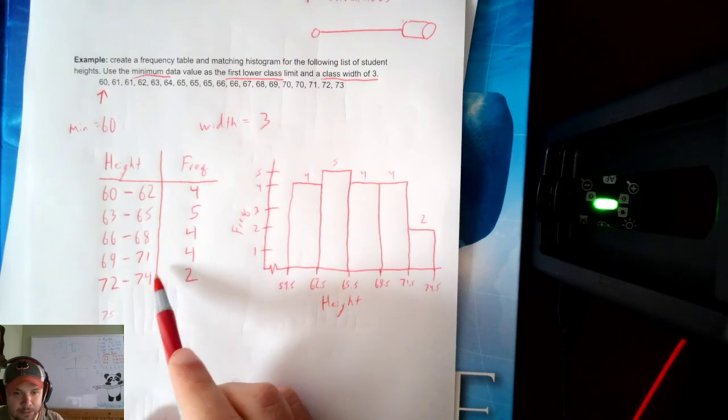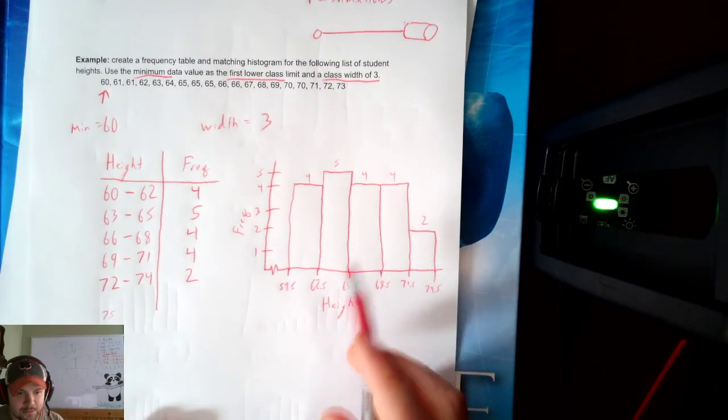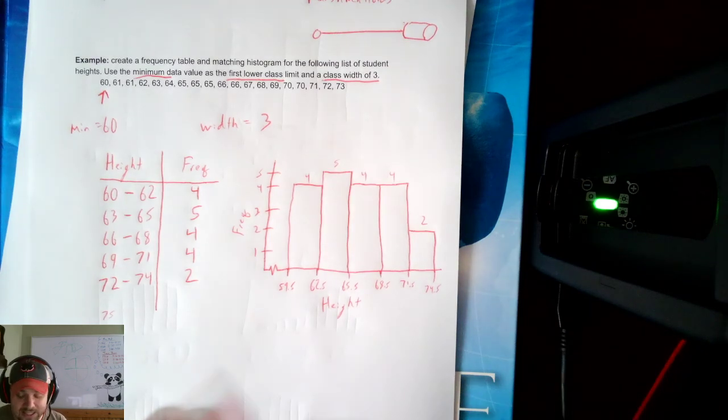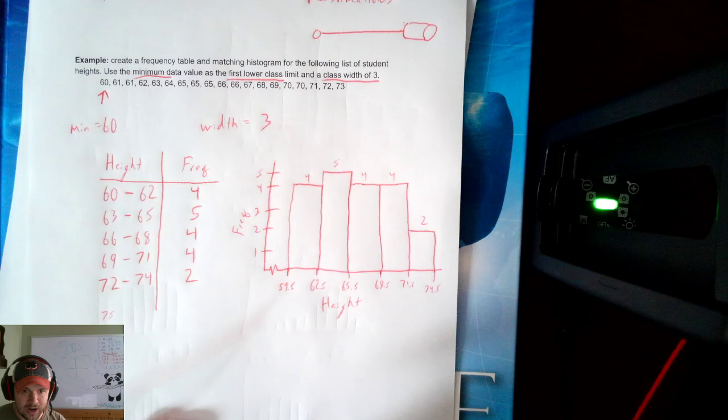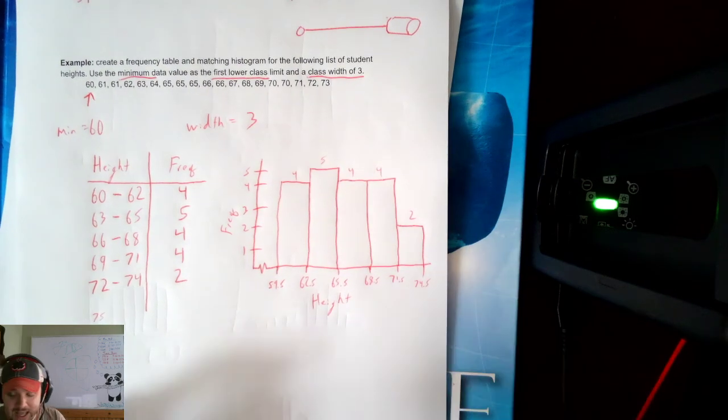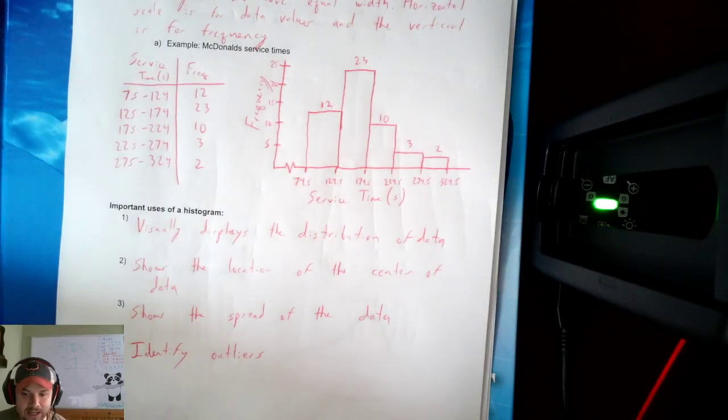So that's a frequency table and a histogram. Notice I have to make the table in order to make the histogram. You need the table first. The histogram is just a graph representing this table. And that brings us to the end of section 2.2. Thank you all for joining me. And I will see you next time.